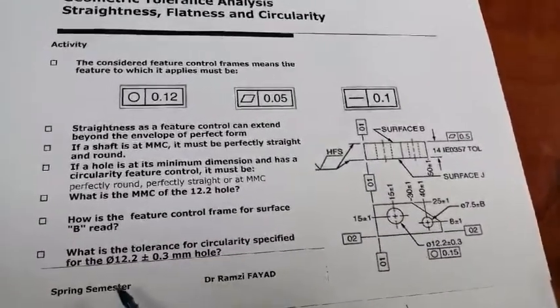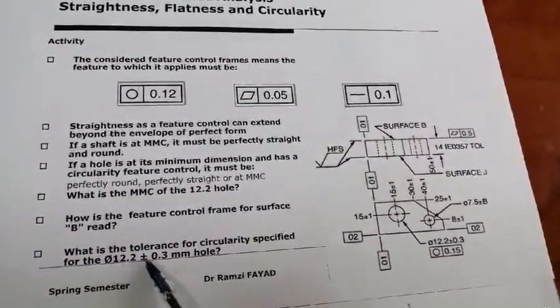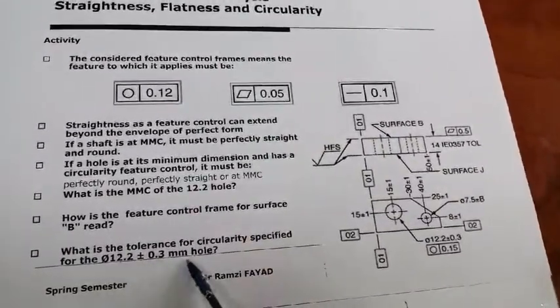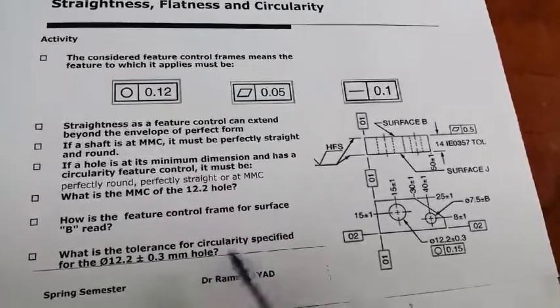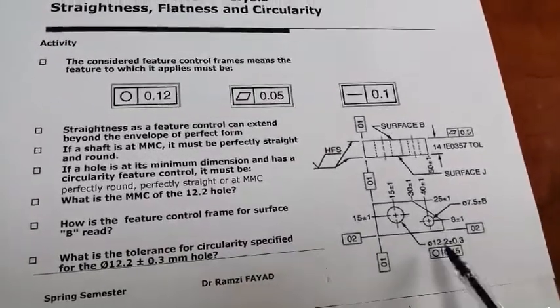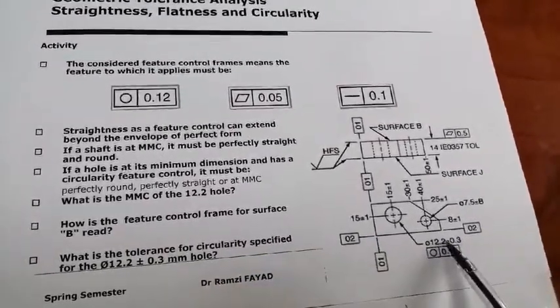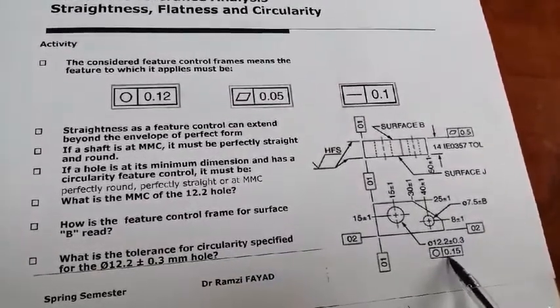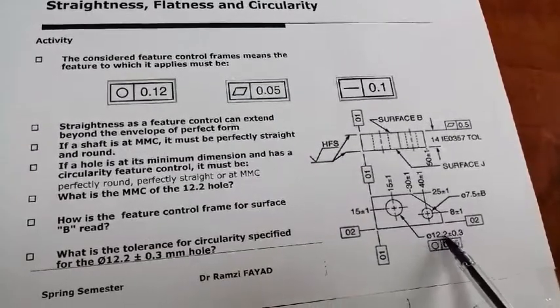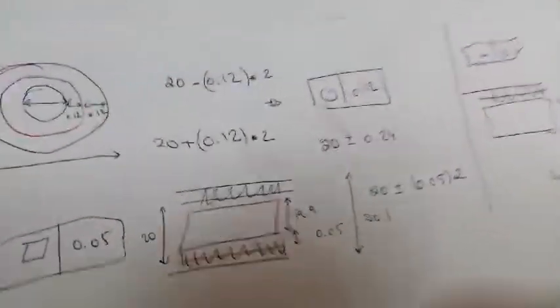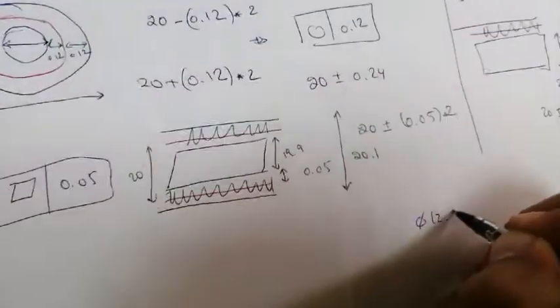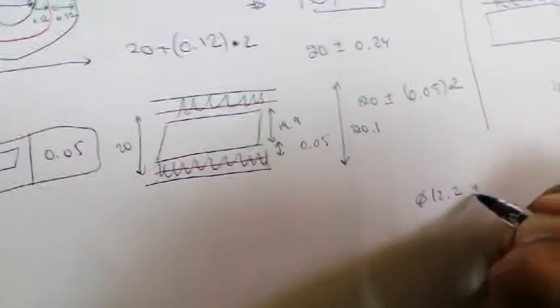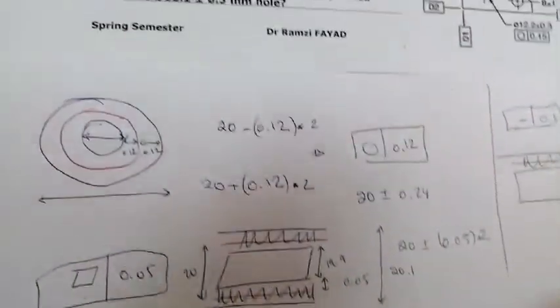What is the circularity tolerance specified for the 12.2 plus or minus 0.3 millimeter hole? The hole is 12.2 and it is between 0.5. If you want to draw this hole it would look like this — we have 12.2 plus or minus 0.3.